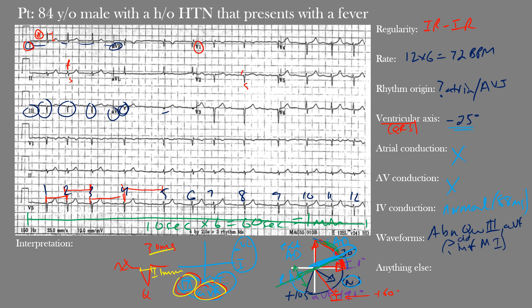Regarding anything else we may have missed: did you notice poor R wave progression in the precordial leads? When discussing R wave progression from V1 to V5, the R wave amplitude should increase progressively. Here we have only small R waves in V1 through V4, and by V5 the R wave should be much larger in most normal patients. This poor R wave progression may indicate an old myocardial infarction not previously reported.